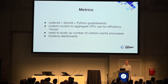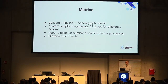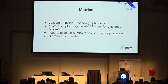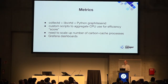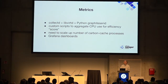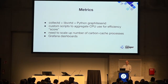For metrics we're not doing anything terribly clever — it's collectd, libvirt, and a bit of Python to send things off to our Graphite service. We've got scripts that take data out of Nova, aggregate it, do some mathematical processing, and spit out a score for each tenant: how efficient is your usage? We define efficiency as: are all your allocated CPUs being run full tilt? The only scaling problem is that you need to increase the number of carbon cache processes as you send more data in.